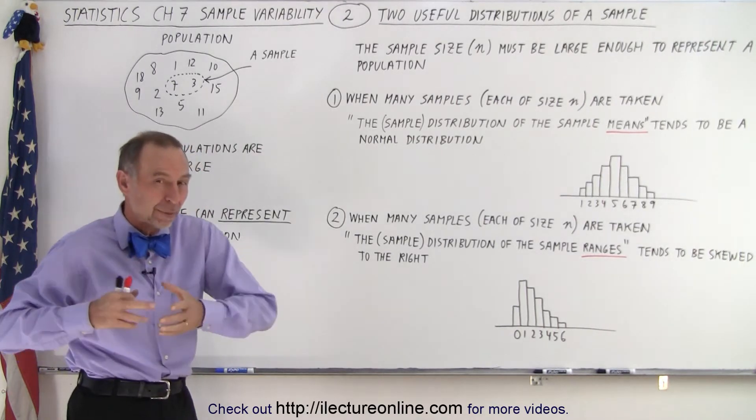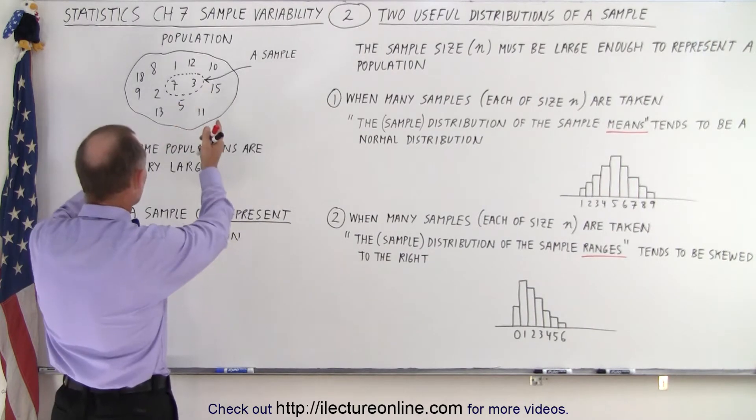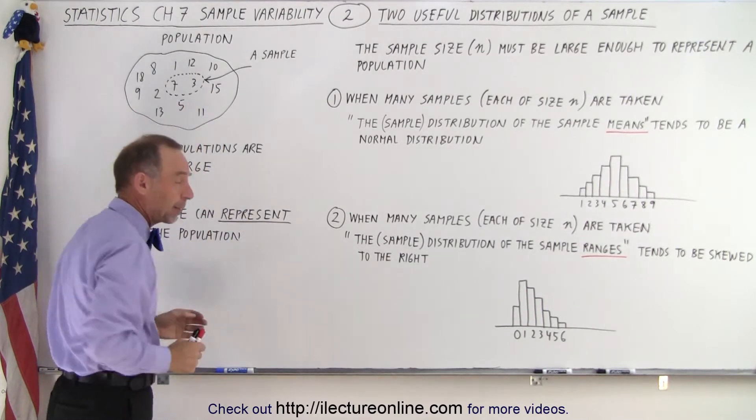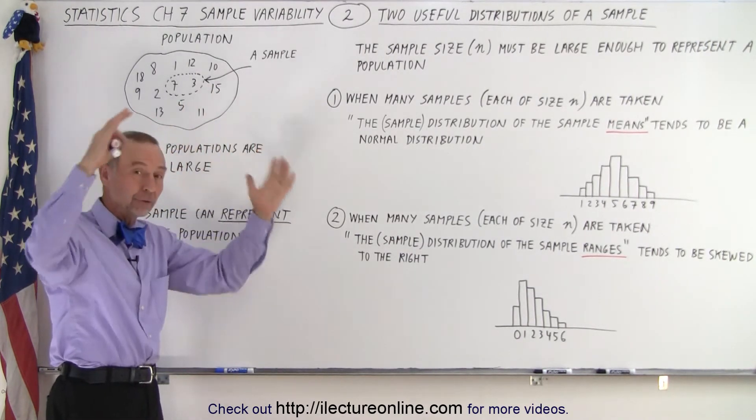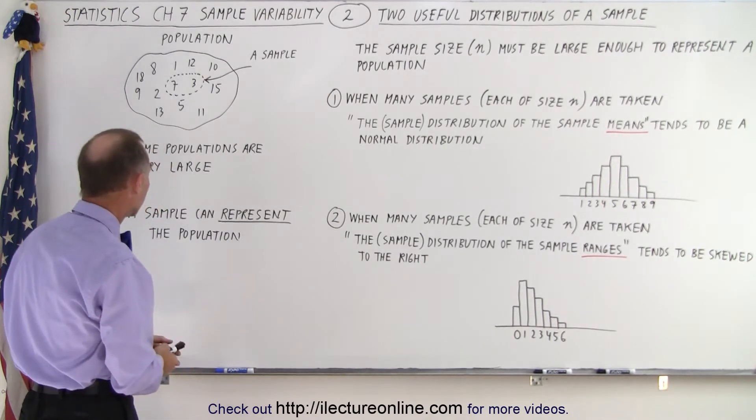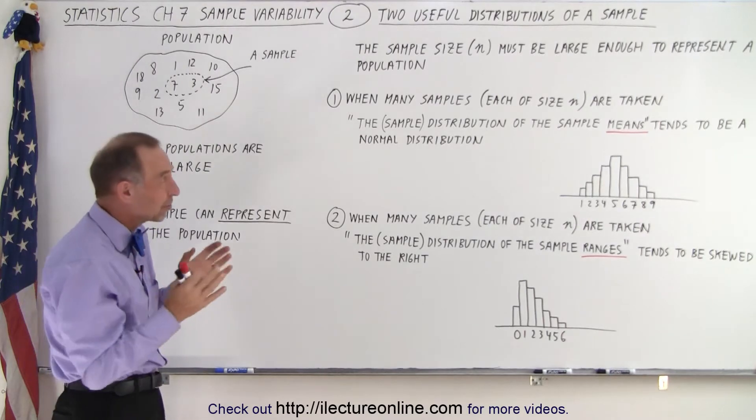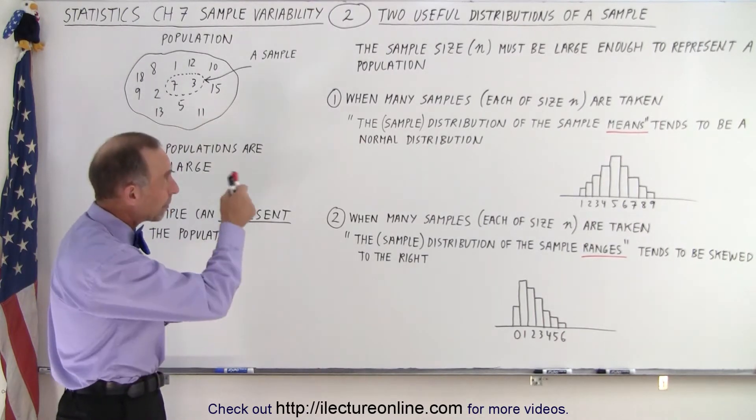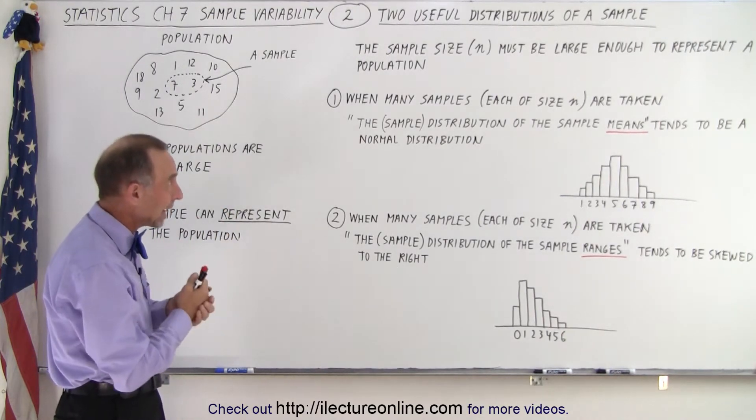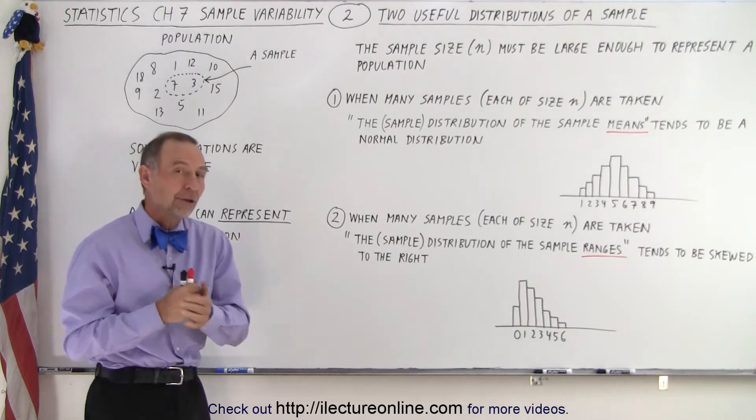The reason why we take samples is because typically populations are very large and we can represent a population by taking a small sample out of the huge population. The sample can represent the population if the sample size, which is represented by n, must be large enough to represent a population.